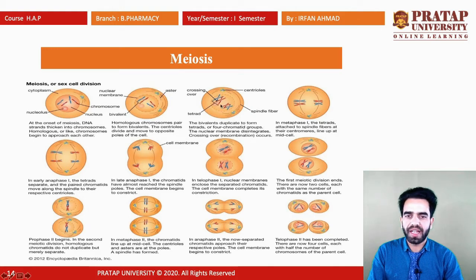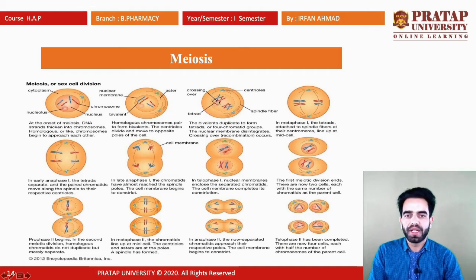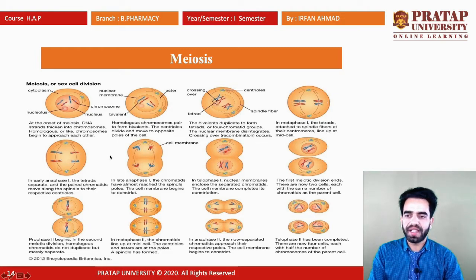The bivalents duplicate to form tetrads, composed of four chromosomes, forming four chromatid groups. The nuclear membrane disintegrates and crossing over — also called recombination — takes place. In metaphase I, the tetrads attach to spindle fibers at their centromeres and line up at the middle of the cell.